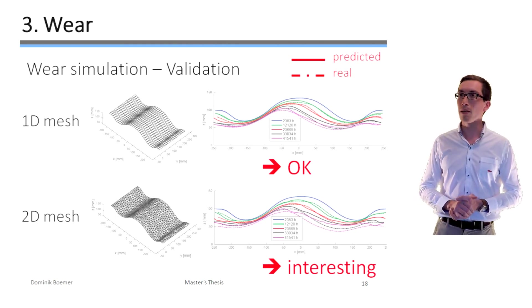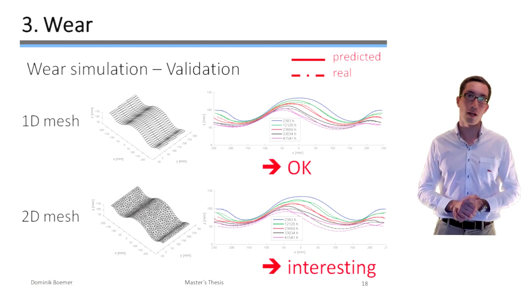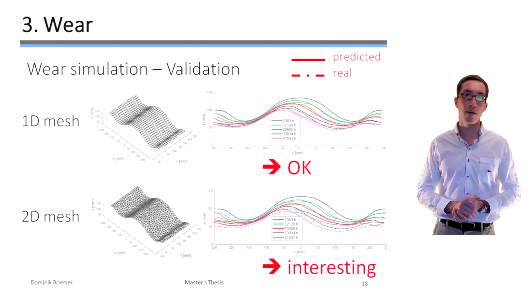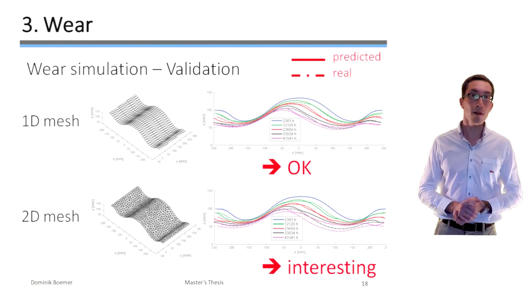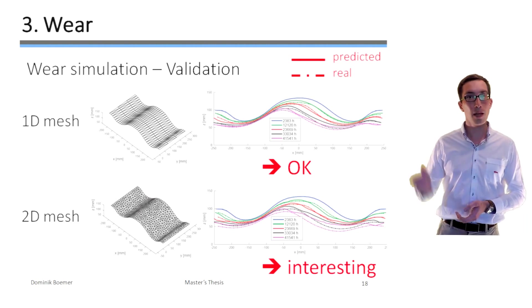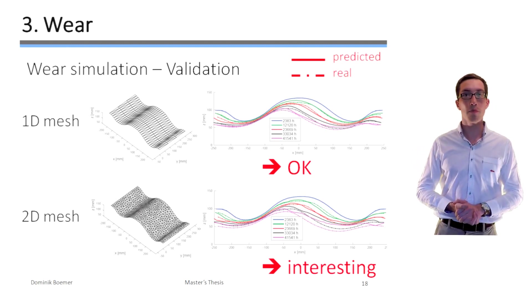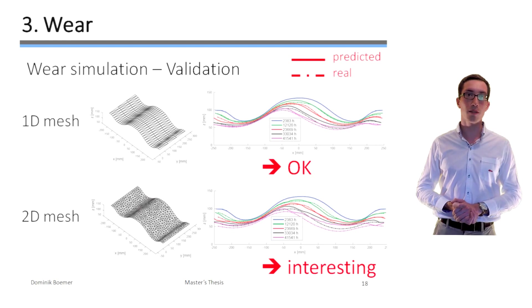So for the 1D mesh, the prediction is quite accurate at least until half of the lifespan and then the gap increases slightly. This might actually be explained by the fact that the real ball mill in which the measurements were taken is one of the few mills with a variable rotation speed. And it seems reasonable that the cement producer increased the rotation speed at this particular moment to keep the mill throughput constant despite the increasingly worn out liner.